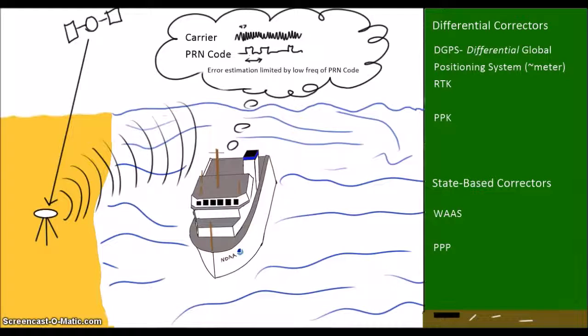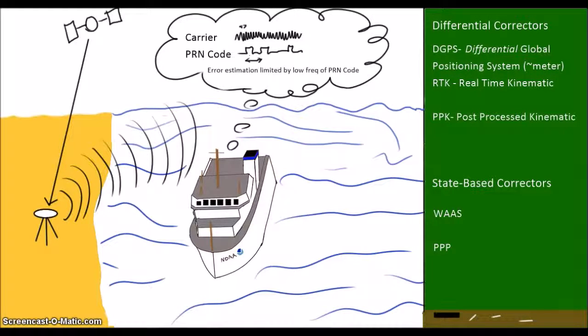This carrier-based differential approach is called kinematic differential GPS. Done in real-time, this is known as real-time kinematic, or RTK. If we collect all the base and rover data and figure out all the corrections after the fact, this is known as post-processed kinematic, or PPK.